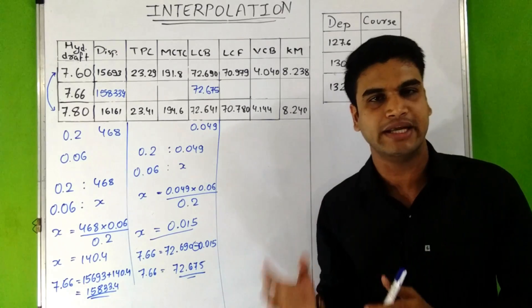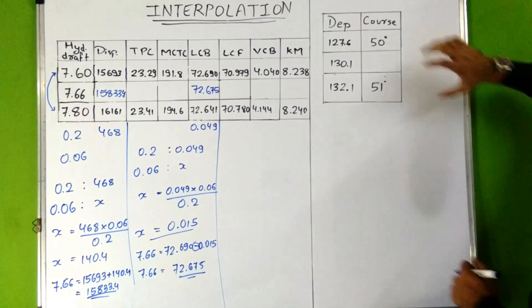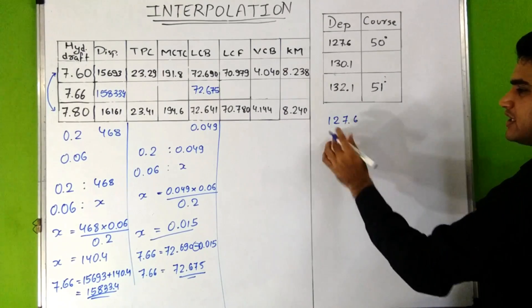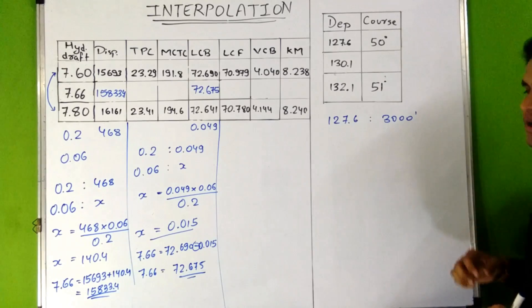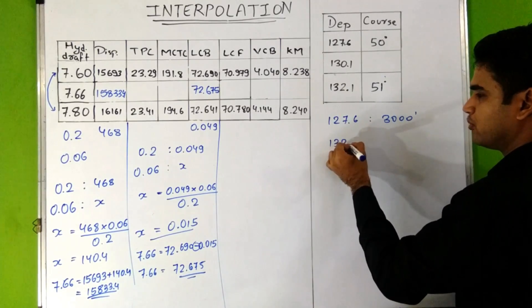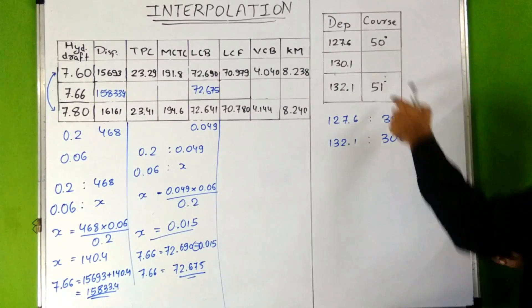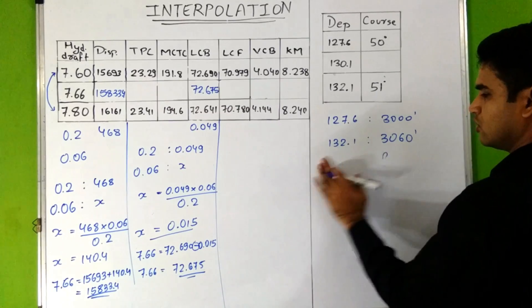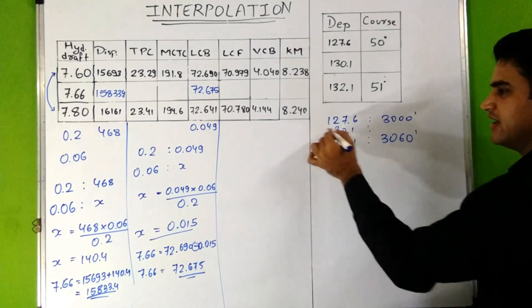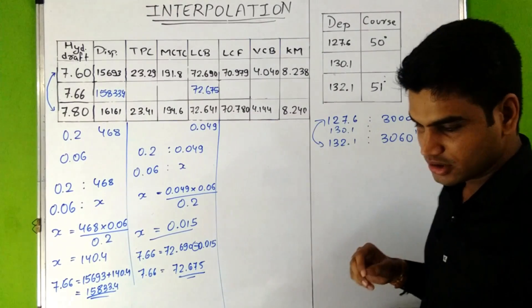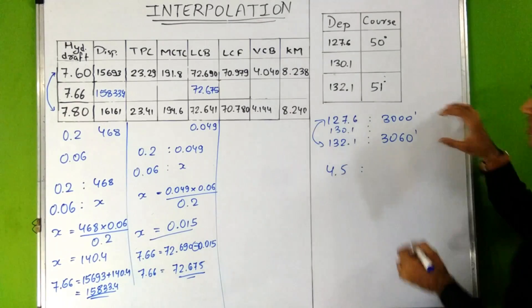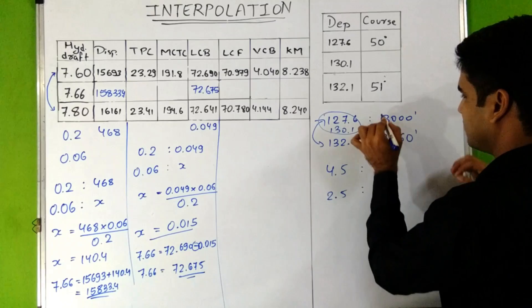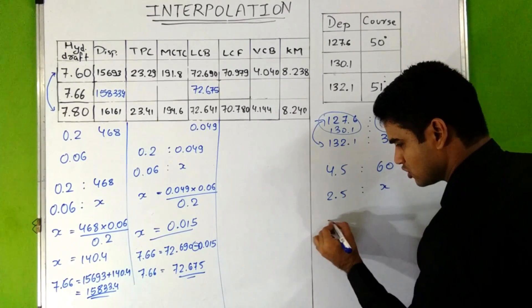Since departure values are in nautical miles or minutes, we convert the course into minutes. When departure is 127.6, the course is 3000 minutes, and when departure is 132.1, the course is 3060 minutes. We need to find the course for departure 130.1. The difference between the two departure values is 4.5, the difference between their courses is 60 minutes, and the difference between 130.1 and 127.6 is 2.5.